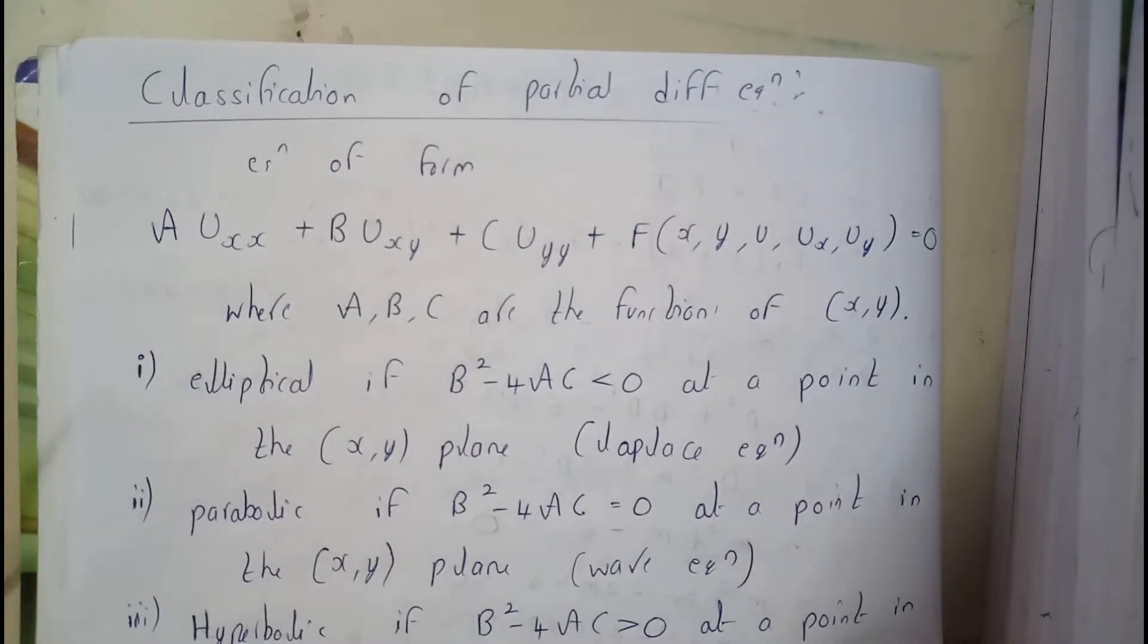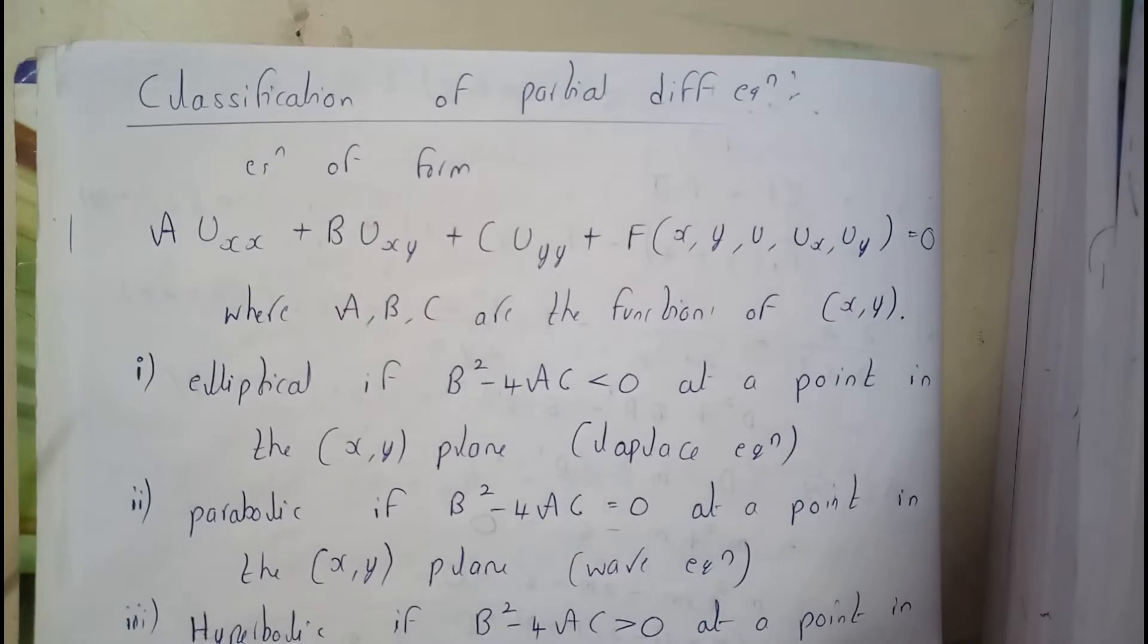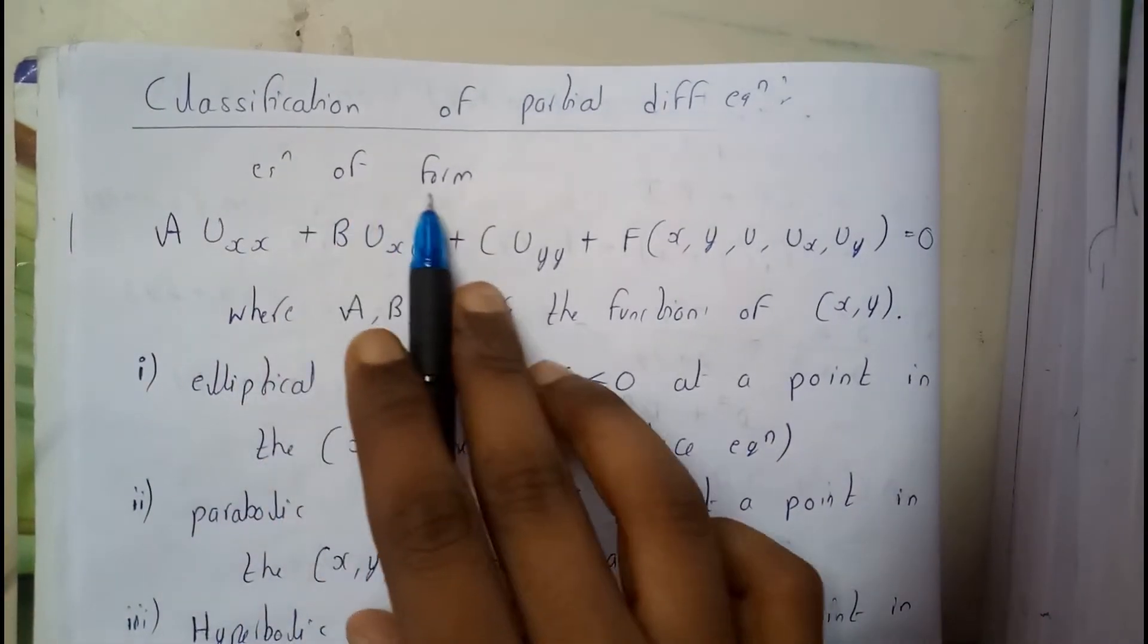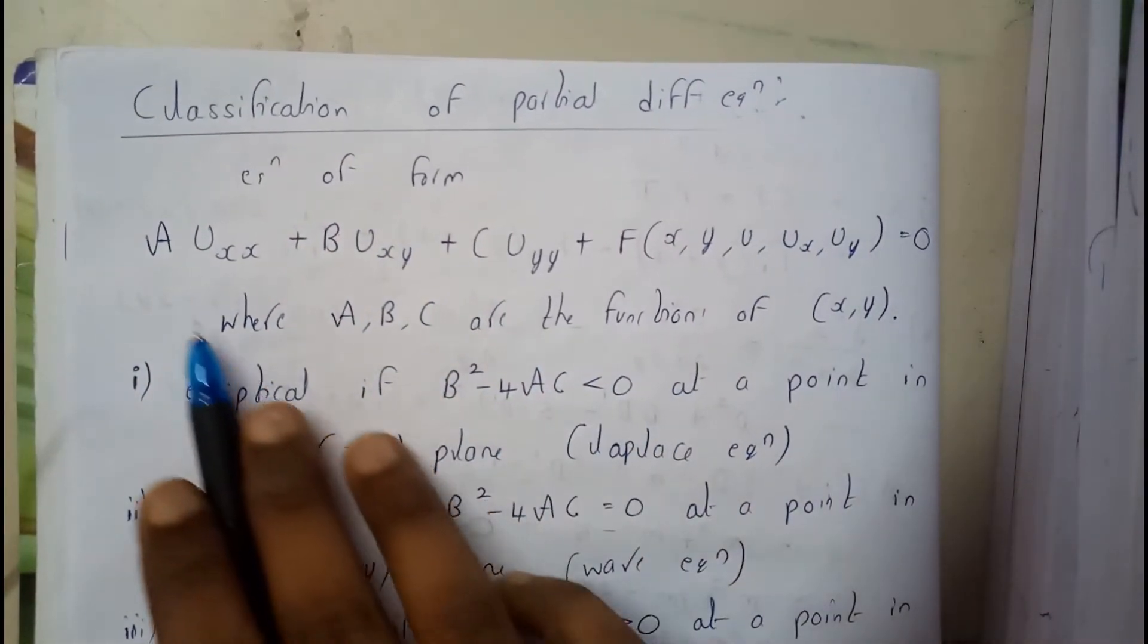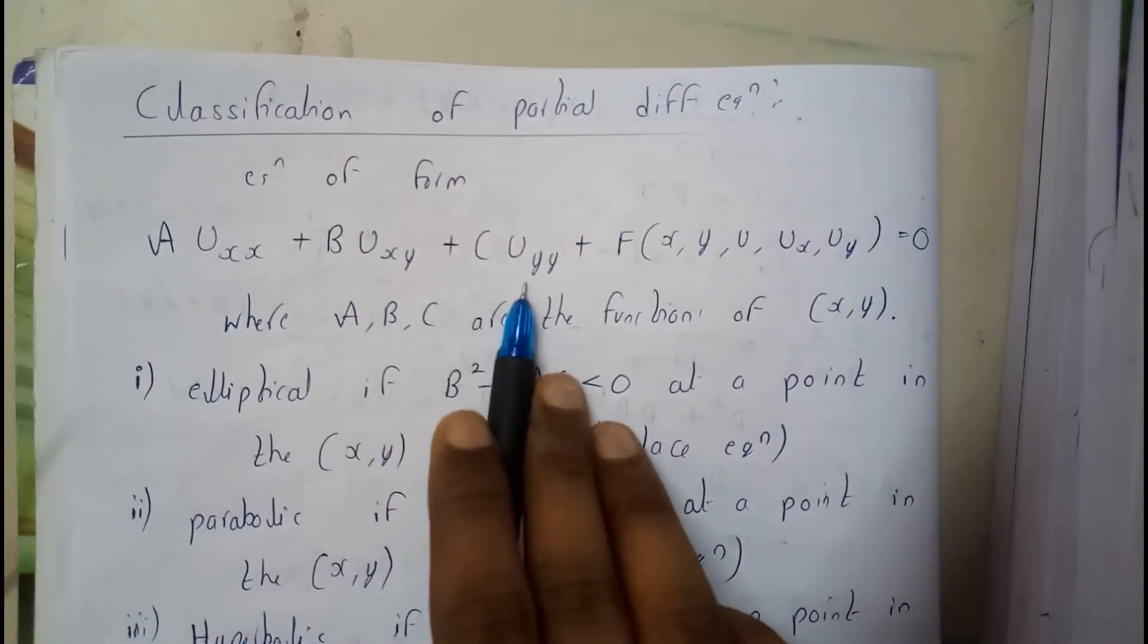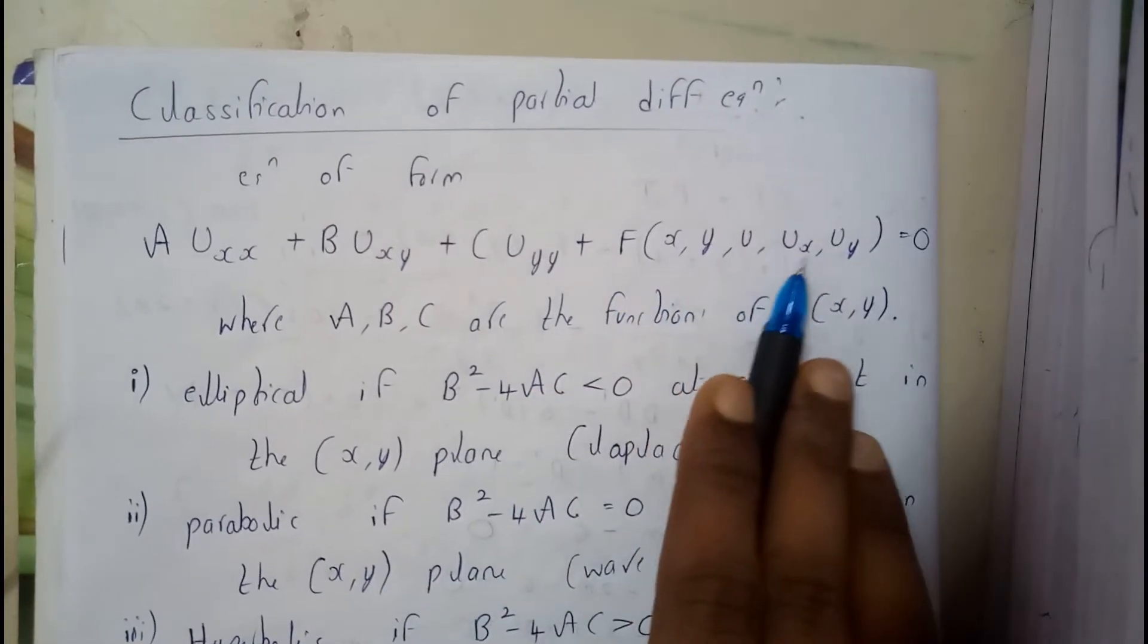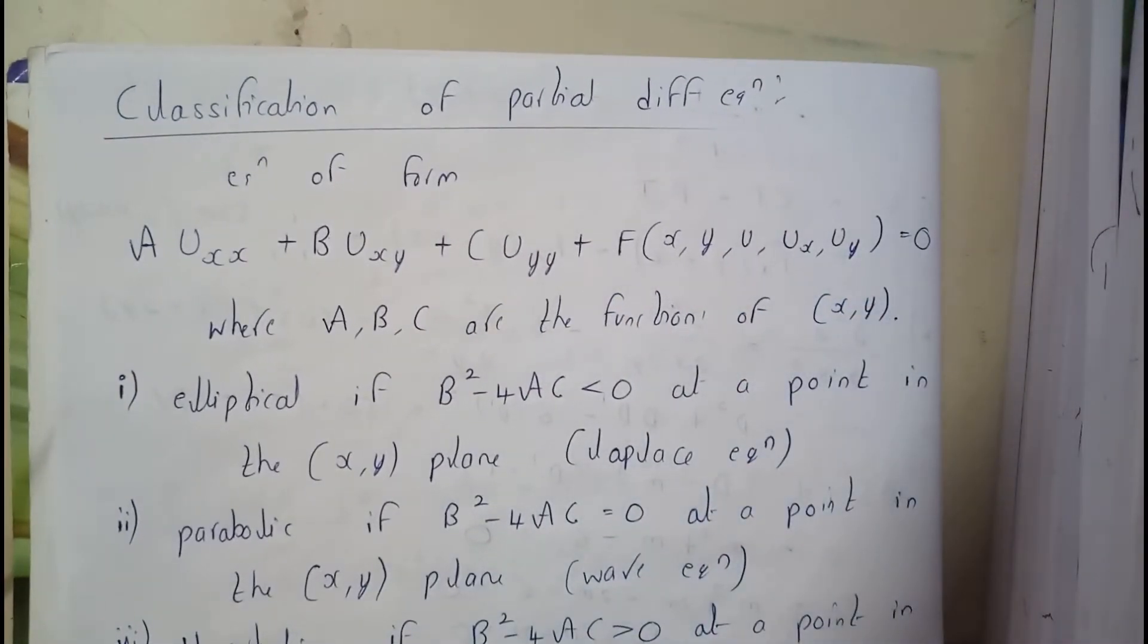Hello guys, we are back with our next tutorial. In this tutorial, let's see classification of partial differential equations. The basic form of the equation is A·Uxx + B·Uxy + C·Uyy + f(x,y,u,ux,uy) = 0.